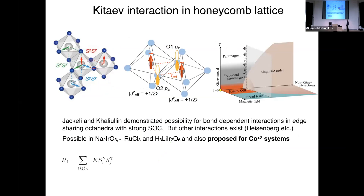This was pointed out by Jackeli and Khaliullin in 2009, who demonstrated the possibility for bond-dependent interactions in edge-sharing octahedra with strong spin-orbit coupling. In a hexagonal lattice built from edge-sharing octahedra, there are multiple exchange paths, and as a result various cancellations occur in the exchange interactions. The exchange interaction perpendicular to the plaquette bridging the two octahedra can be strongest, and this promotes an Sz-Sz interaction, Sy-Sy interaction, and Sx-Sx interaction in exactly the Kitaev fashion.